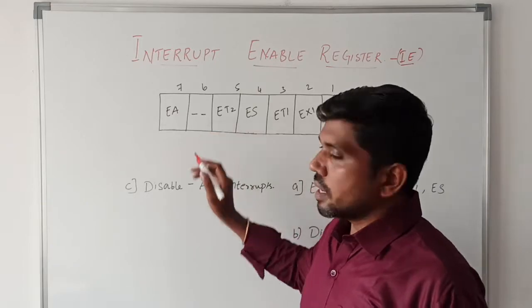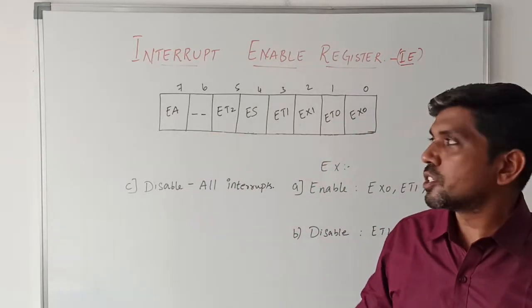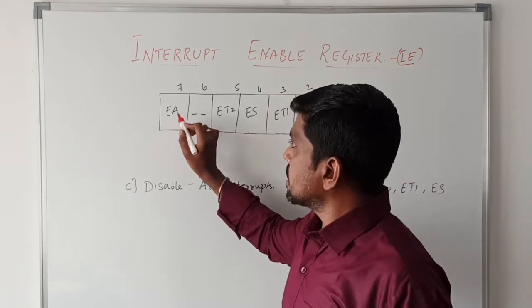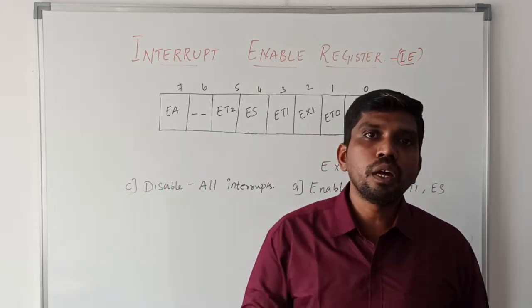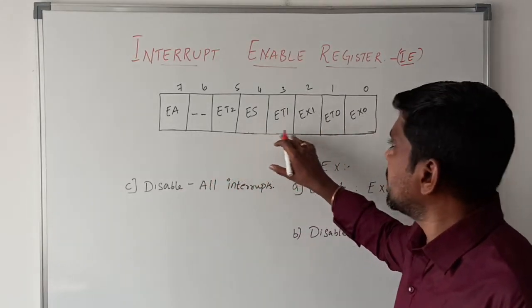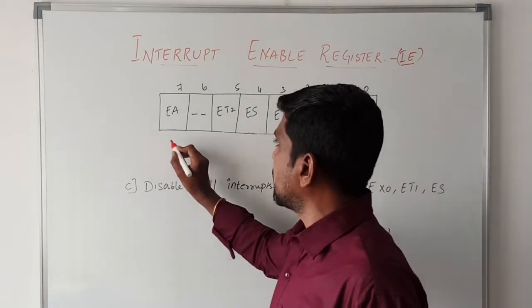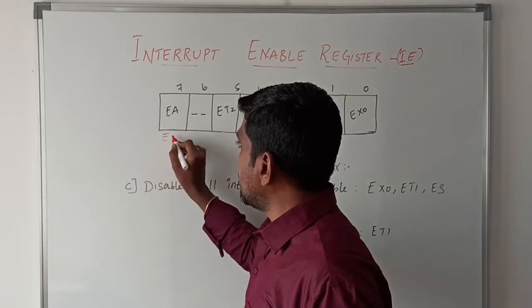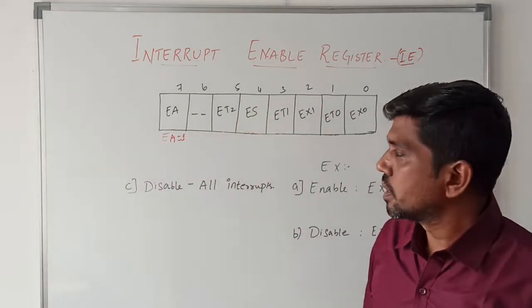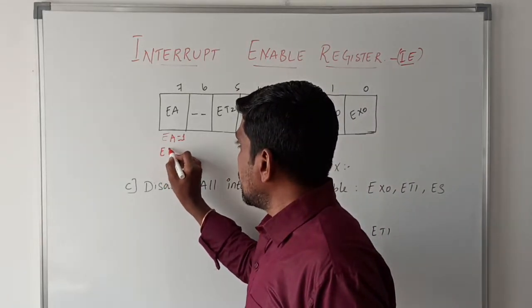Bit number six is undefined. This bit is used for future purposes. And bit number seven is EA. EA represents enable all the interrupts. If you want to enable any one of the interrupts, first you should enable bit number seven EA. If EA value equals one, if EA equals zero it indicates all the interrupts should be cleared.